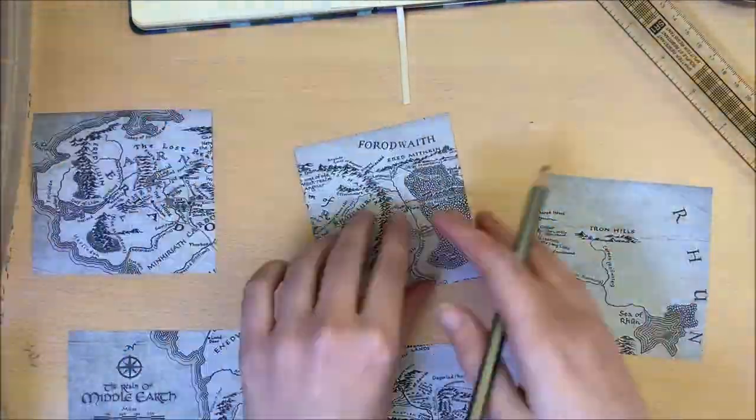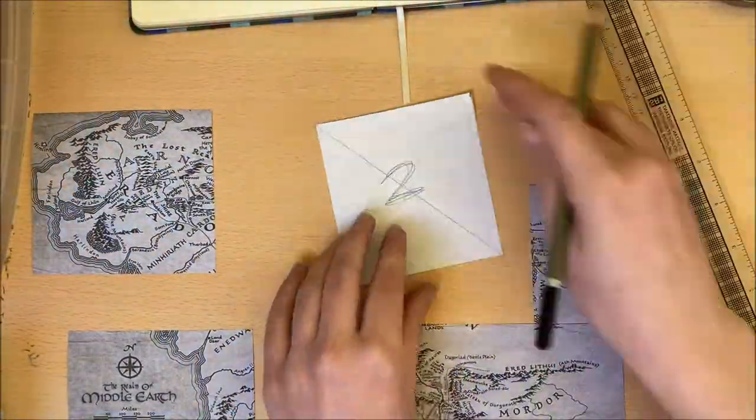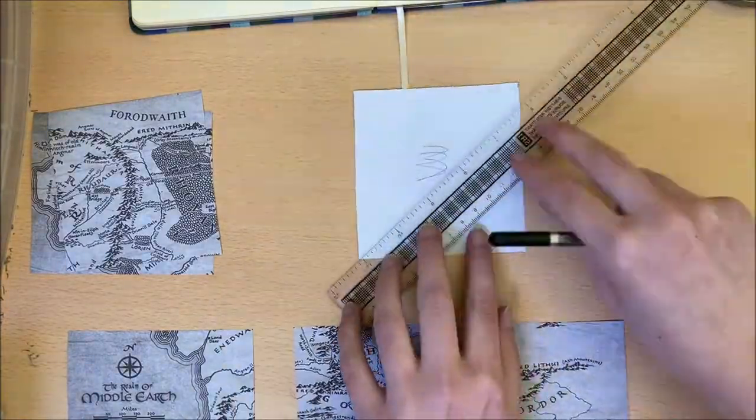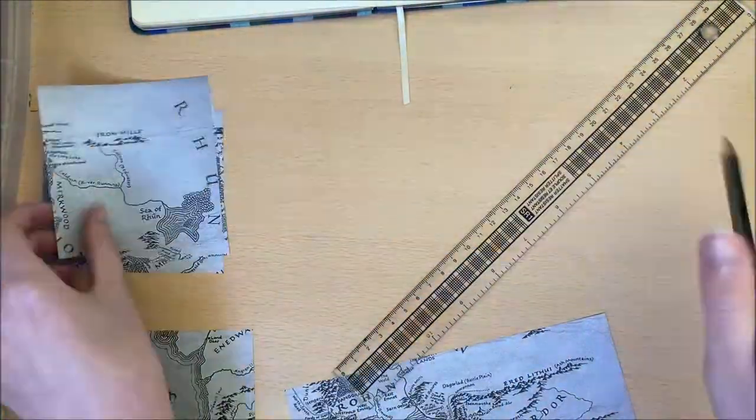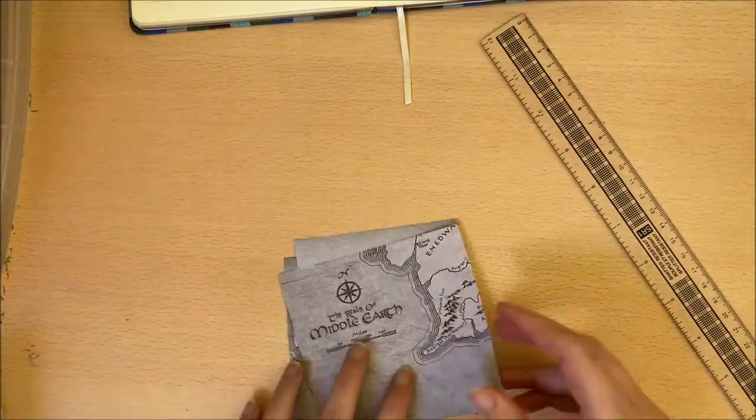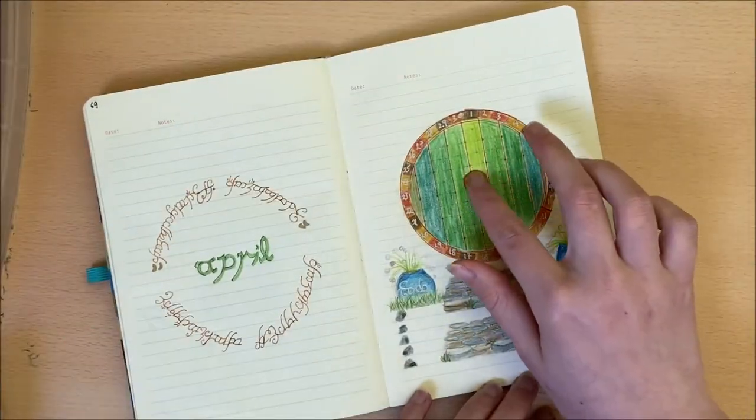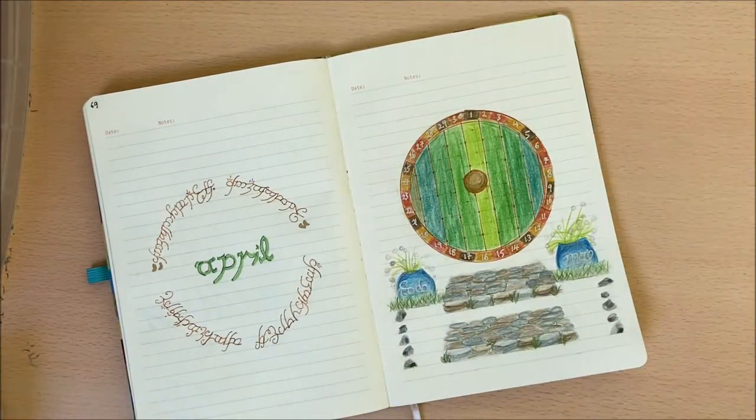Once that was done, I quickly drew just a few lines going diagonally across the back of the map, to help me cut them in a straight line. I decided to add each piece in separate triangles, and they act as sort of corner bookmarks for each weekly spread.